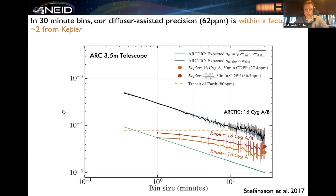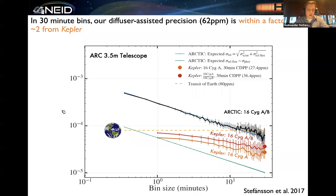In some of our engineering observations after installing the diffuser, we observed the bright binary 16 CygA-B, which is magnitude 6 — bright enough that you normally wouldn't observe it with a 3.5-meter telescope with an imager because you would just saturate almost instantly. But with a diffuser, because we can spread out the light over many pixels, we can make use of all those photons. The photometry binned in 30-minute bins achieves about 62 parts per million precision, which is formally below the 80 parts per million transit depth of Earth around the sun. We also chose this target because Kepler observed it, and in a head-to-head comparison we're within a factor of two from Kepler on the same target.